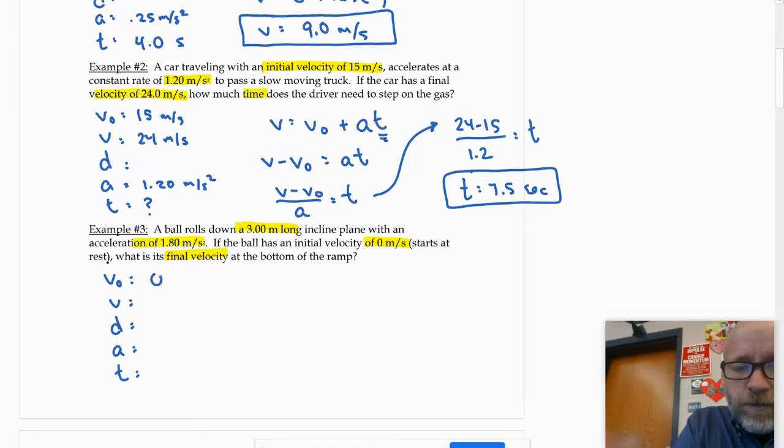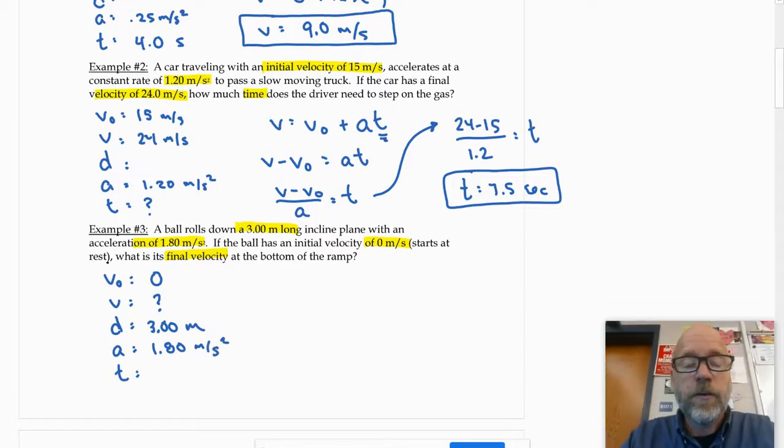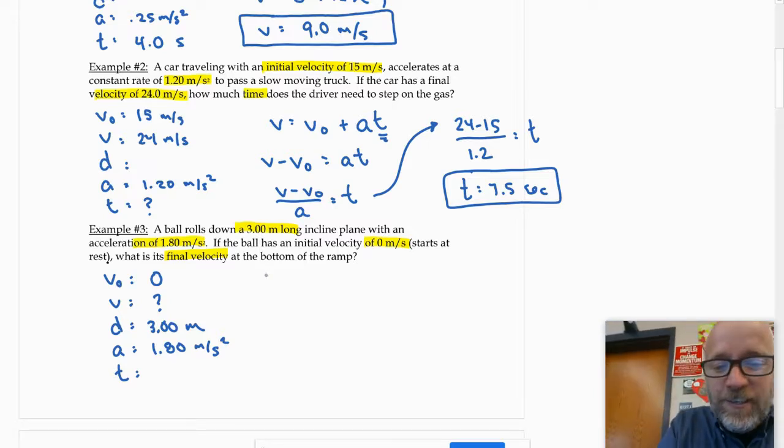Okay. So the initial velocity is zero. We're looking for the final velocity. Displacement was 3 meters. And the acceleration is 1.8 meters per second squared. So which formula is going to allow us to solve for V? The one without T in it? Good. So it's going to be V squared equals V0 squared plus 2AD.